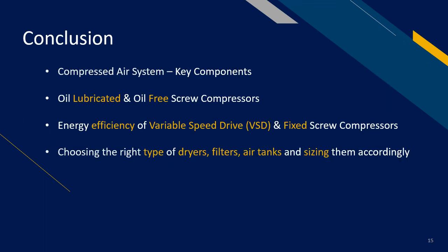We have arrived at the conclusion of this series. We have learned on the key components in a compressed air system, which include compressors, dryers, filters, and air tanks. We have also explored all the different types of screw compressors available in the market, as well as the energy efficiency of variable speed drive and fixed screw compressors. Finally, we have covered how to choose the right type of dryers, filters, and air tanks, and also how to size them accordingly.